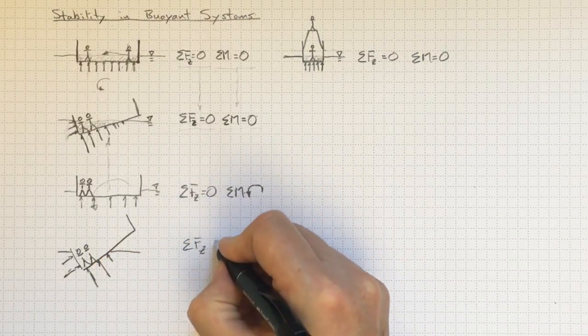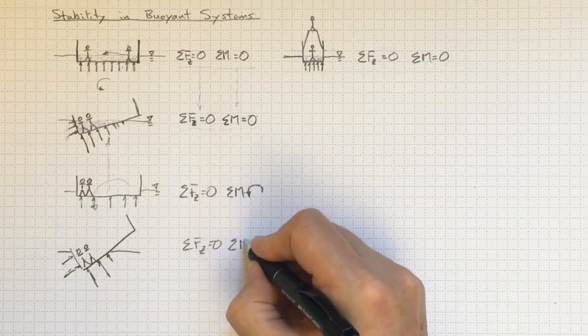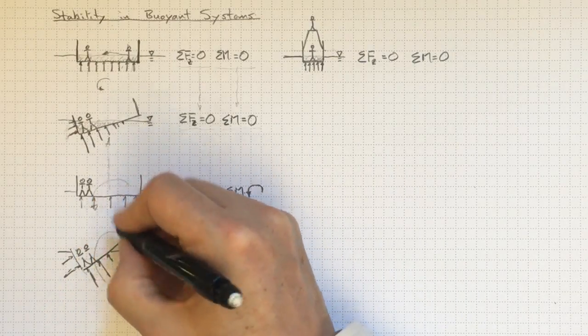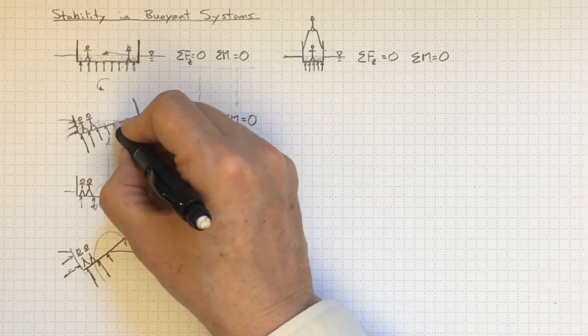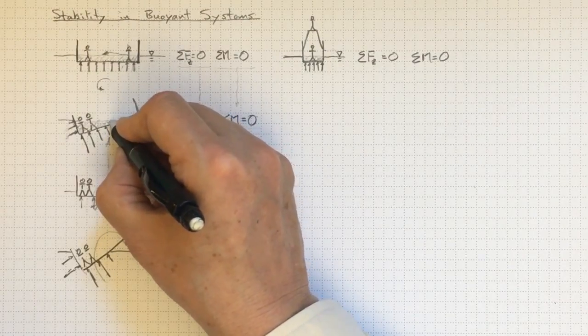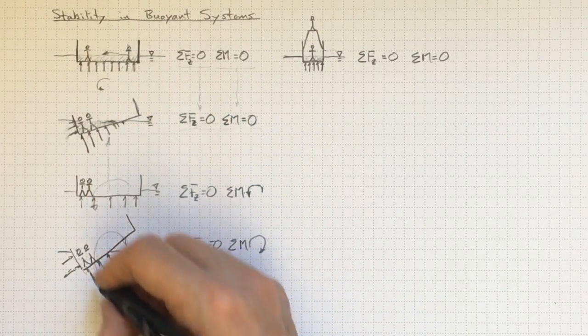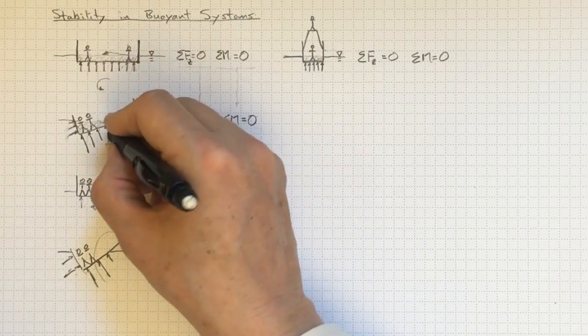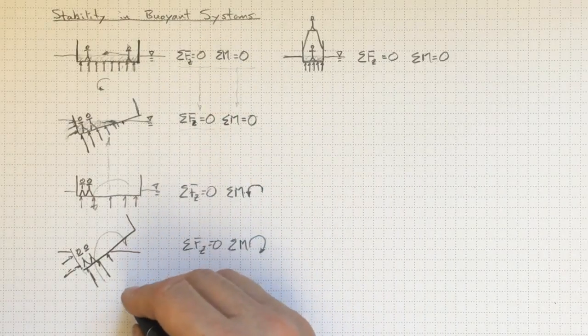If our moment at that point gave us a return, that would tend to rock us back in this direction. And we'd return back towards this eventual stable situation. Our moment here is causing us to rotate back towards this more stable situation.